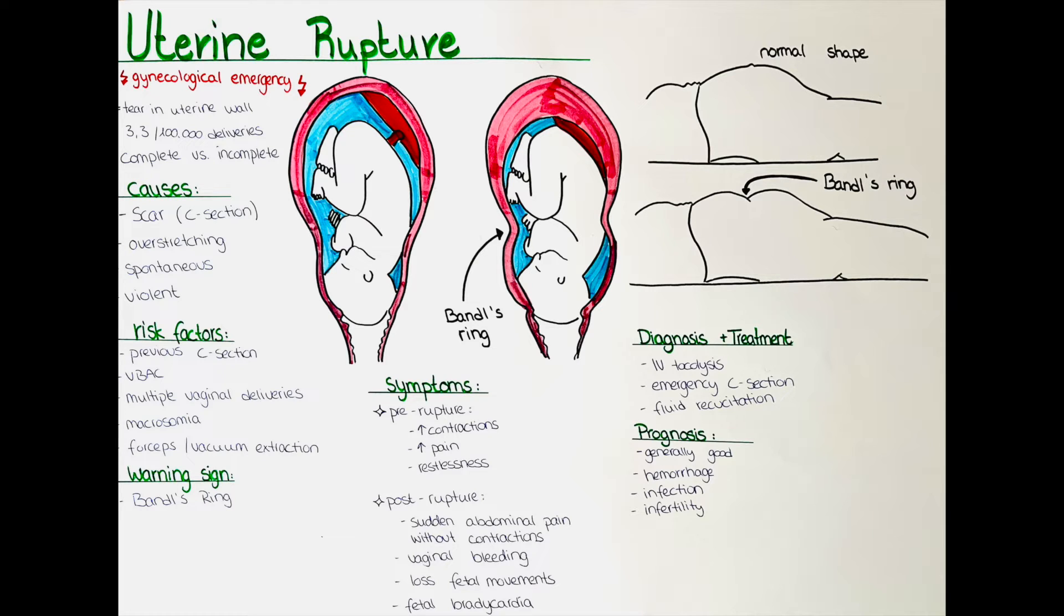In a complete rupture, the tear goes through the entire wall of the uterus, so the endometrium, the myometrium, and the perimetrium. While in an incomplete rupture, the outermost layer which is the serous perimetrium remains intact.